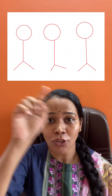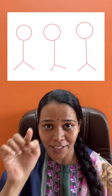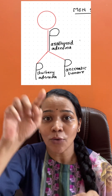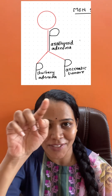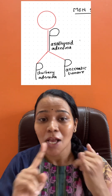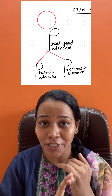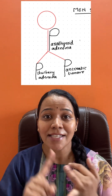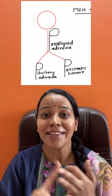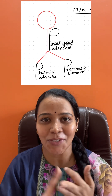For MEN 1, draw a stick figure and convert each limb into a 'P' — the whole body is converted into P's. So what are the three P's? One is pituitary adenoma, second is parathyroid adenoma, and third is a pancreatic tumor.